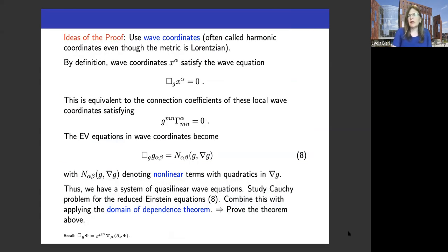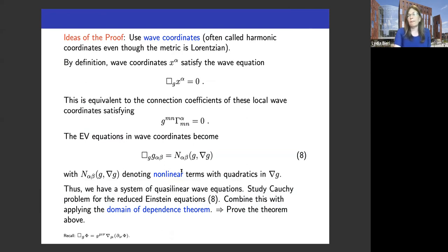Let me briefly outline the main ideas of the proof of well-posedness, where wave coordinates were introduced and used by Choquet-Bruhat. When you write the Einstein equations down in wave coordinates — where the coordinates fulfill the wave equation given by the box operator with respect to the corresponding metric — the Einstein equations reduce to a very simple form of wave equations. You get a wave equation where on the right-hand side are the nonlinear terms, which are quadratic in nabla-chi. So you have a quasi-linear set of wave equations, and this together with the domain of dependence theorem proves well-posedness.